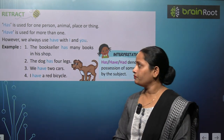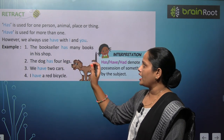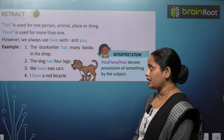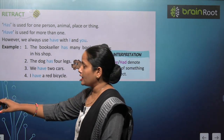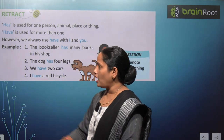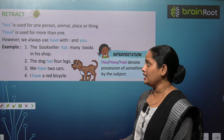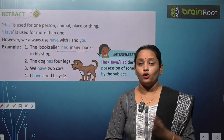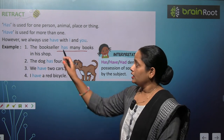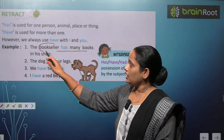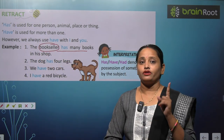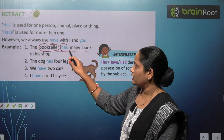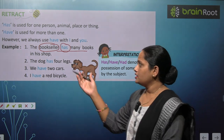The examples are: The bookseller has many books. The bookseller ke paas bahut sari books hai. Ab aap mujhse batao — kitne booksellers hain yahaan pe? Only one. Yahaan pe sirf ek bookseller hai, toh hum yahaan pe use karenge has.